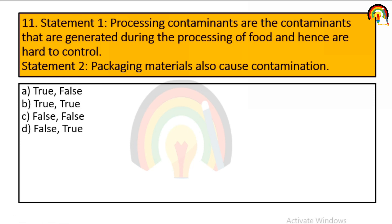Processing contaminants are contaminants generated during the process of food production and hence are hard to control — that is true. Packaging material can also cause contamination — that is also true. So option B is correct.